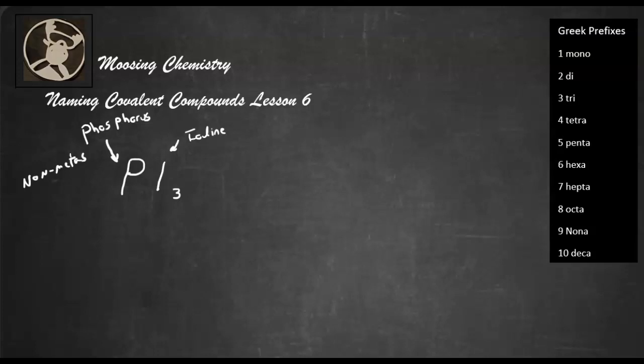All right, so let's go ahead and erase that information there, because that's what we have. We have two non-metals combining. Okay, so now, since we're using non-metals, we get to use Greek prefixes in the naming. So the first name is going to be phosphorus.